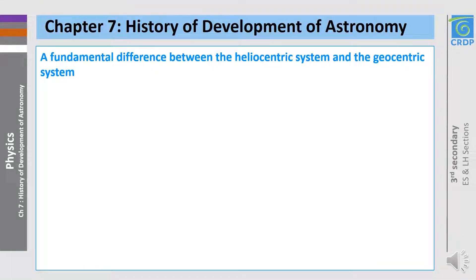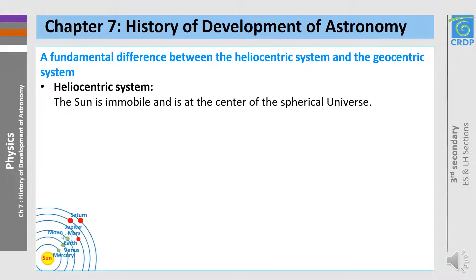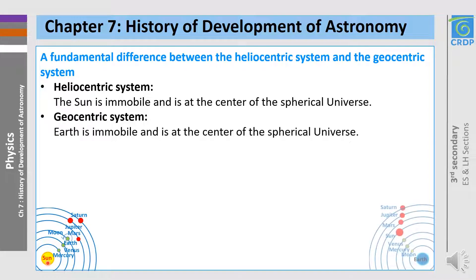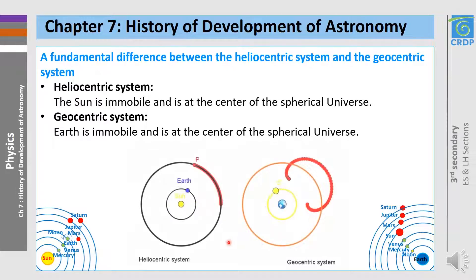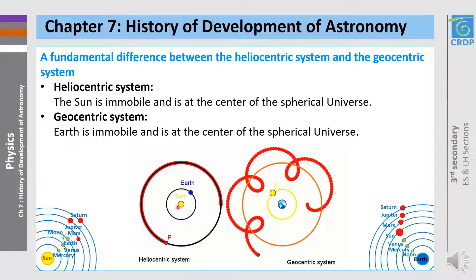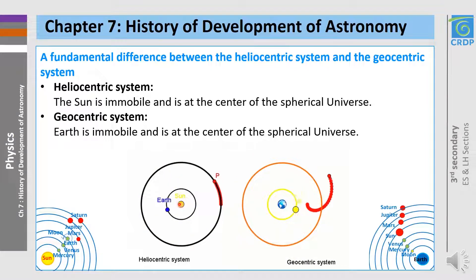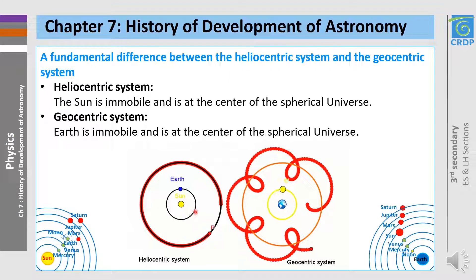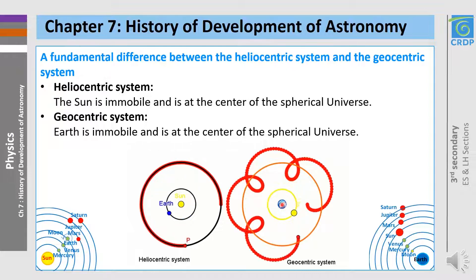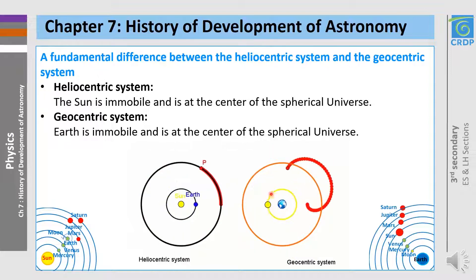Now let's remind you about a fundamental difference between the heliocentric system and the geocentric system. For the heliocentric system, the sun is immobile and is at the center of the spherical universe. But for the geocentric system, the Earth is immobile and is at the center of this spherical universe. Let's repeat this using the animation. For the heliocentric system, you see the sun is at the center of the universe and the Earth is orbiting around the sun. For the geocentric system, the Earth is at the center of the universe and the sun is orbiting around the Earth.